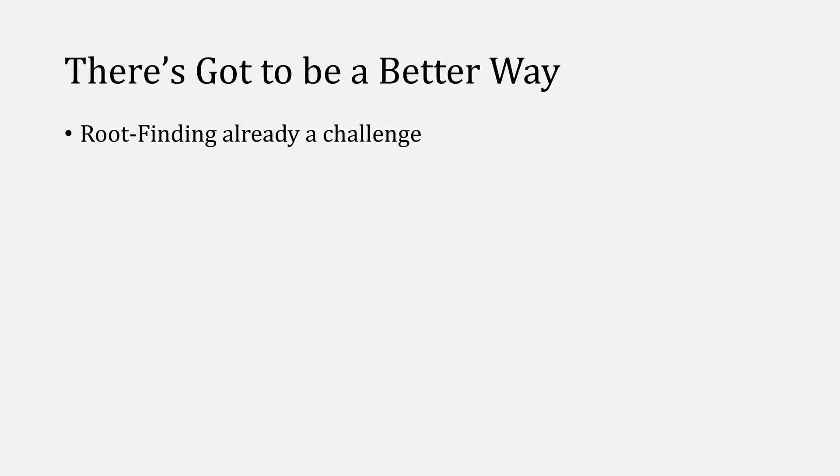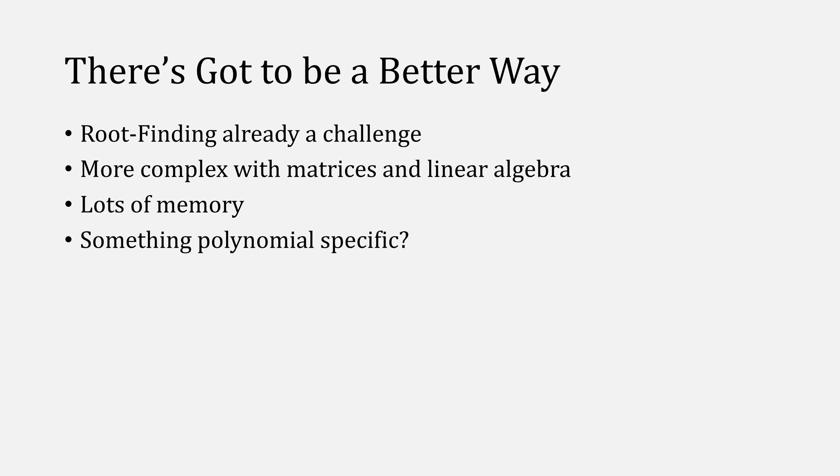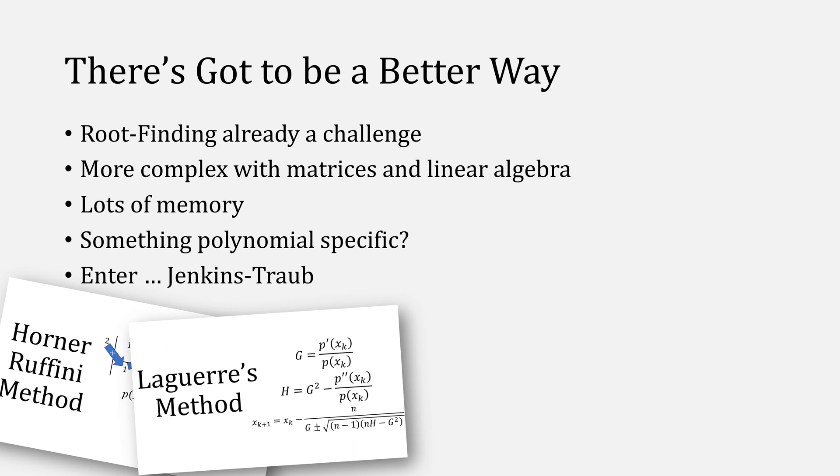But there's got to be a better way, because rootfinding is already a challenge, and it gets even more complicated when you add matrices and linear algebra, requiring a lot of memory and things like matrix multiplication. There's got to be something polynomial-specific, and that's where Jenkins-Traub comes in. Now, of course,